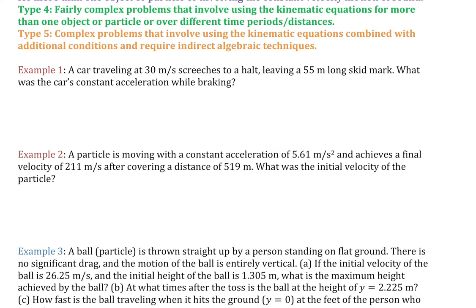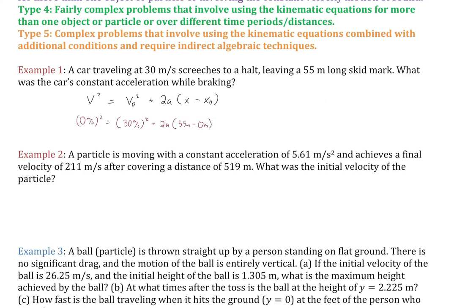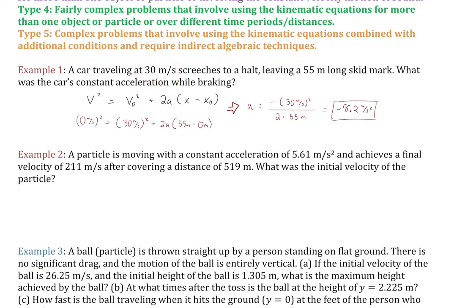Example 1: A car traveling at 30 meters per second screeches to a halt, leaving a 55-meter-long skid mark. What was the car's constant acceleration while braking? Based on the knowns — initial velocity, displacement, and final velocity of zero — we use equation 3: v² = v₀² + 2aΔx, with only one unknown, a. Plugging in and solving, we get negative 8.2 meters per second squared. The acceleration is negative because it's in the opposite direction of the initial velocity.